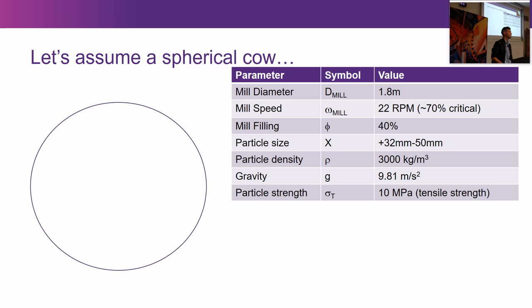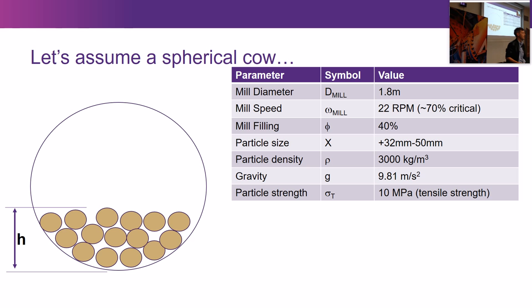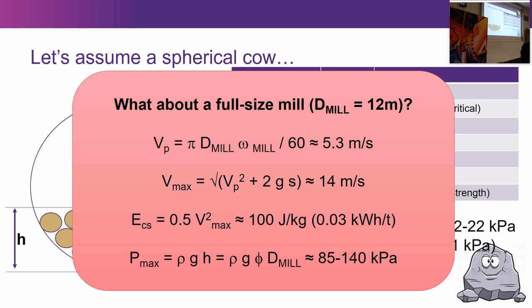Of course, rocks are not thrown into mills in isolation — there are lots of other rocks. And when you've got lots of other rocks on top of you, you're under a bit of pressure. So what about the overburden pressure pressing down on rocks at the base of the mill? If we fill the mill to height h — determined by the mill filling — the maximum overburden pressure, assuming a uniform material of this density, would be 22 kilopascals. Accounting for void space with a 40% void fraction, it's about 12 kilopascals. I'm currently under 101 kilopascals of atmospheric pressure just standing here. So 20 kilopascals or so is really not too much — once again, a happy little rock camper.